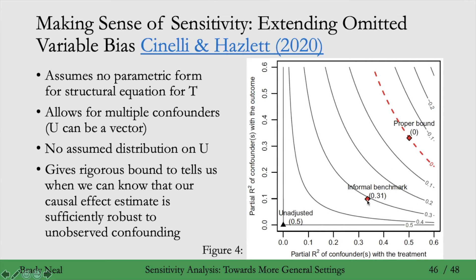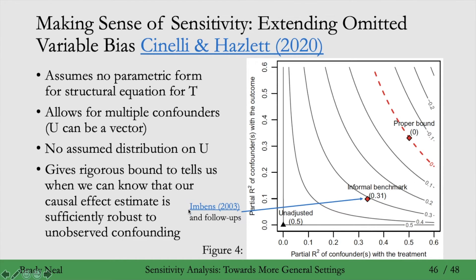An informal benchmark might give you a point where you take some observed covariate and get its partial R-squared with the treatment on the x-axis and the partial R-squared with the outcome on the y-axis. This is a common practice that Imbens introduced in 2003, and many follow-up papers follow this style. But it turns out you actually need to take into account the unobserved confounders when looking at the partial R-squared of some covariate with treatment, and similarly for the partial R-squared with outcome — but you can't do that because they're unobserved. Not taking into account the unobserved confounders is what they refer to as informal benchmarking, which is what Imbens 2003 and many follow-ups do.